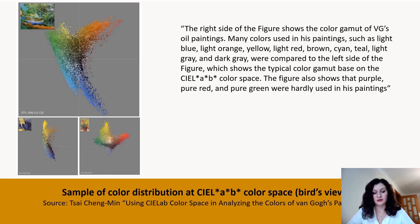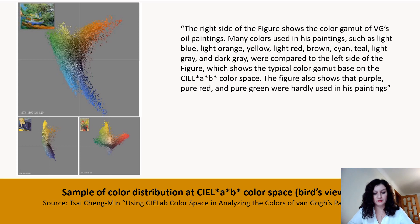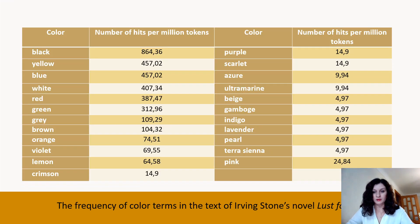Digital technologies are constantly evolving and actively used for the analysis of works of art. For example, in 2019, the results of a study on the use of the CIE Lab color space for the analysis of colors in Van Gogh's oil paintings were published. This study used a novel method identifying the color distribution of oil paintings from color volume analysis. In our research, we apply a corpus methodology. A focus sub-corpus of the text of the novel 'Lust for Life' was created in the Sketch Engine.